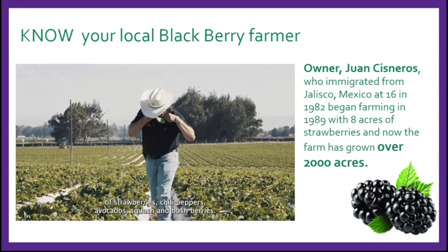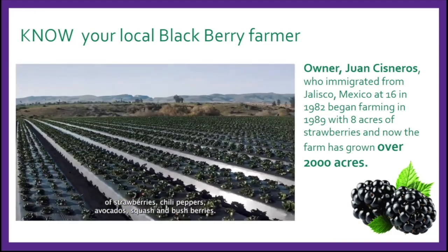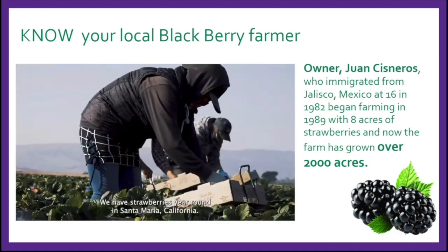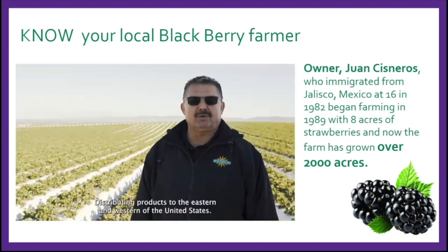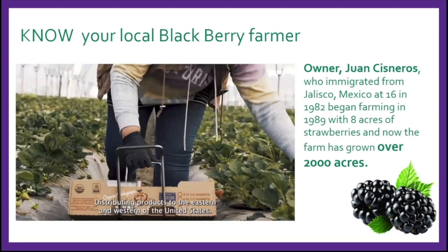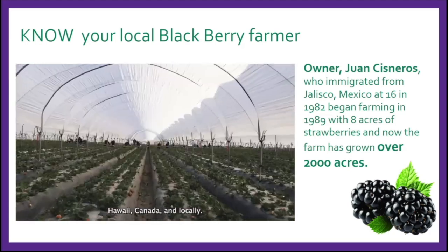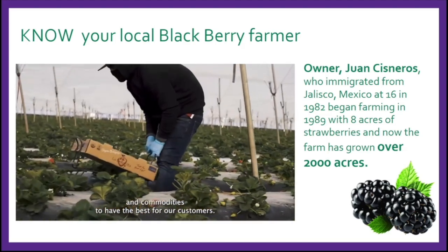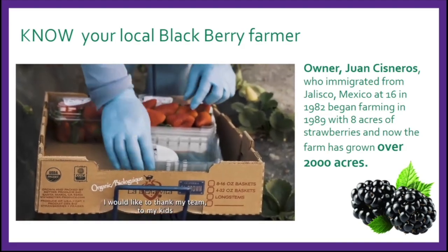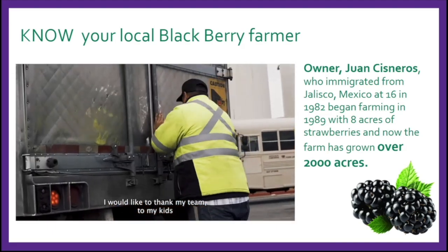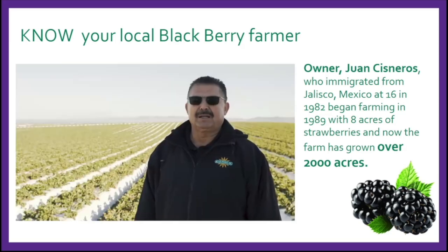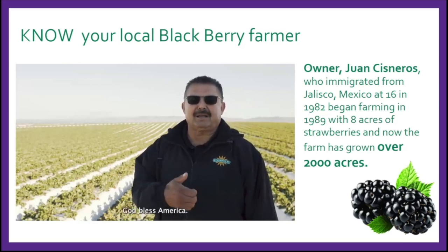Now Berre Produce has over 2,000 acres of strawberries, chili peppers, avocados, squash, and bush berries. We have strawberries year-round in Santa Maria, central Mexico, and Baja California, distributing to the eastern and western United States, Hawaii, Canada, and locally. We are always experimenting with new varieties to have the best for our customers. I would like to thank my team, my kids who are my motivation, and all the stores and consumers for their support. God bless America.